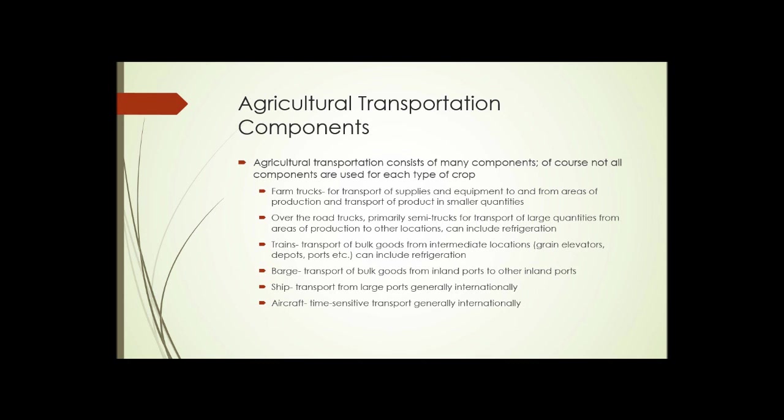Next up the line, we have trains. These are primarily used only for the transport of bulk goods from intermediate locations — meaning they've already been moved once from the production area to an intermediate location such as a grain elevator, depot, or port — and then moved to another intermediate location. Trains also can include refrigeration, so goods requiring refrigeration are easily transported by train.